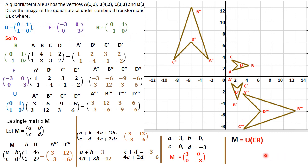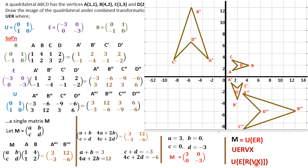So E times R gives a 2×2 matrix, and that 2×2 matrix is then multiplied by U in the order they appear, giving us matrix M. What if there were even more matrices — say U, E, R, V, X? The same process is followed: multiply V and X first to get a single matrix, then multiply that by R, then by E, then by U. This gives a single matrix for the entire combined successive transformation.